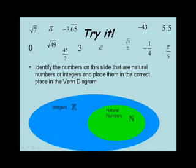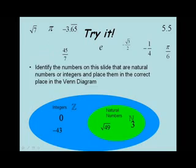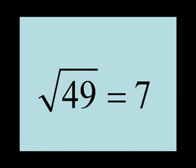Let's try some. Looking at the numbers on the slide, identify the numbers that are natural numbers or integers and place them in the correct part of the Venn diagram below. The number zero by definition is an integer. The number three falls in the natural numbers — it's a positive whole number. The number negative 43 is a whole number but it's negative, so it falls in the set of integers. The natural numbers also contains the square root of 49, because we can write the square root of 49 as the number seven.